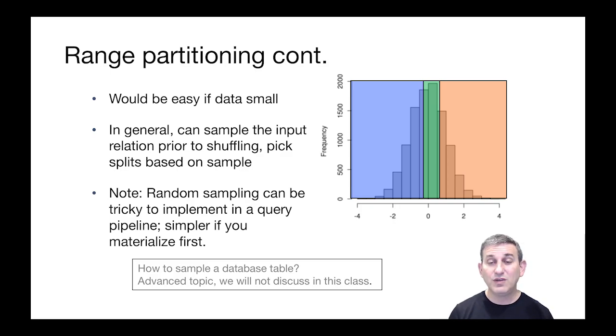So if the data is small, you can literally build a bar chart like this and partition the data into even thirds. But in general, the data is very big and it would be expensive to figure out where these partitions should be. So what's usually done to get good range partitioning for sorting in a parallel system is to have every node sample its data, gather those samples together, and then build this histogram, so to speak, over just the sample of the data. And that helps us pick good split points based on a random sample of the data. And then we can tell each machine how to partition based on the ranges we choose from sampling the data.